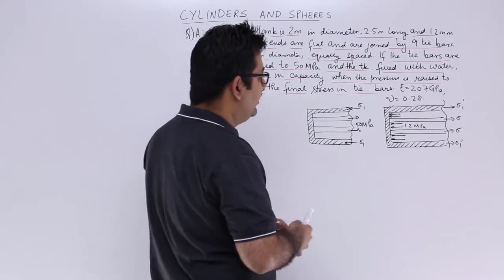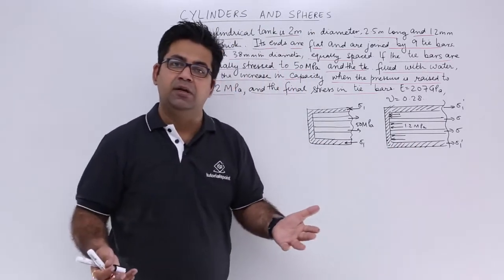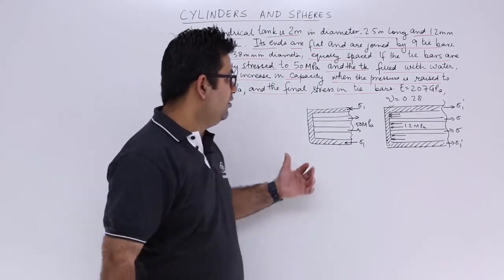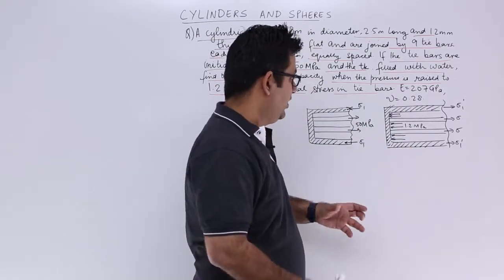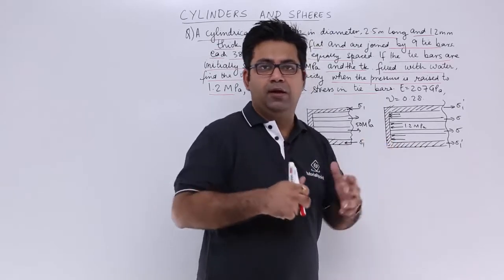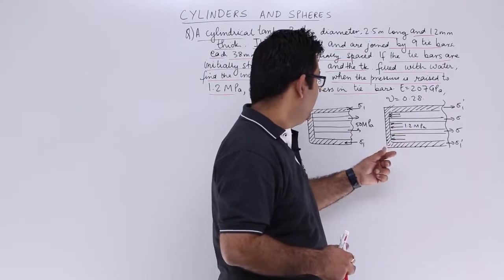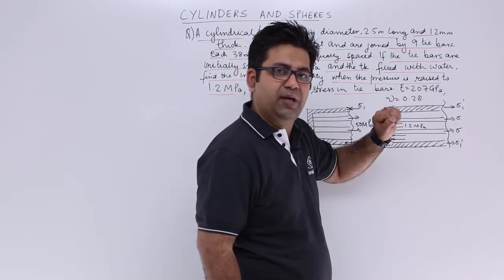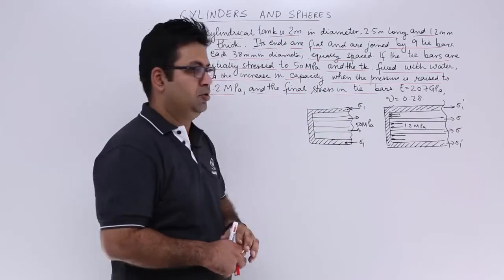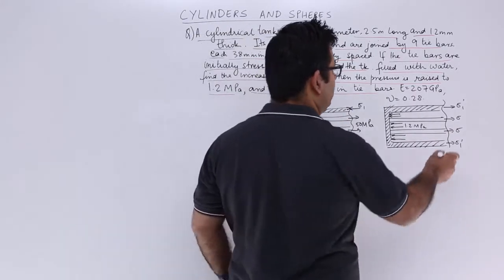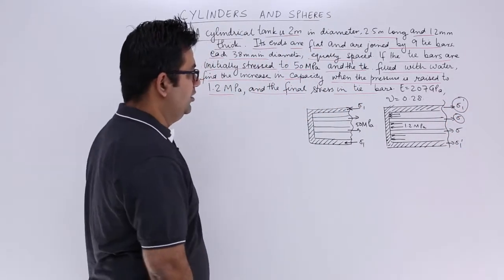Now I increase the internal pressure to 1.2 MPa — let us say the initial pressure is atmospheric. Due to this, some additional stress is developed inside. You will have a new longitudinal stress sigma_1_dash in the cylinder and a new stress sigma in the tie rods. We need to find out these two values.